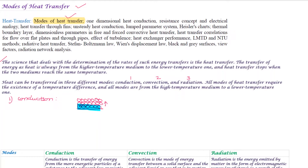That is the conduction heat transfer. The next mode is convection heat transfer. If you have a hot plate, there is a fluid on the top surface. If you have the molecules transferring energy, we can see the ideal gas equation PV = mRT. The density will change with temperature. If you have fluid layers, the density will decrease with increasing temperature.